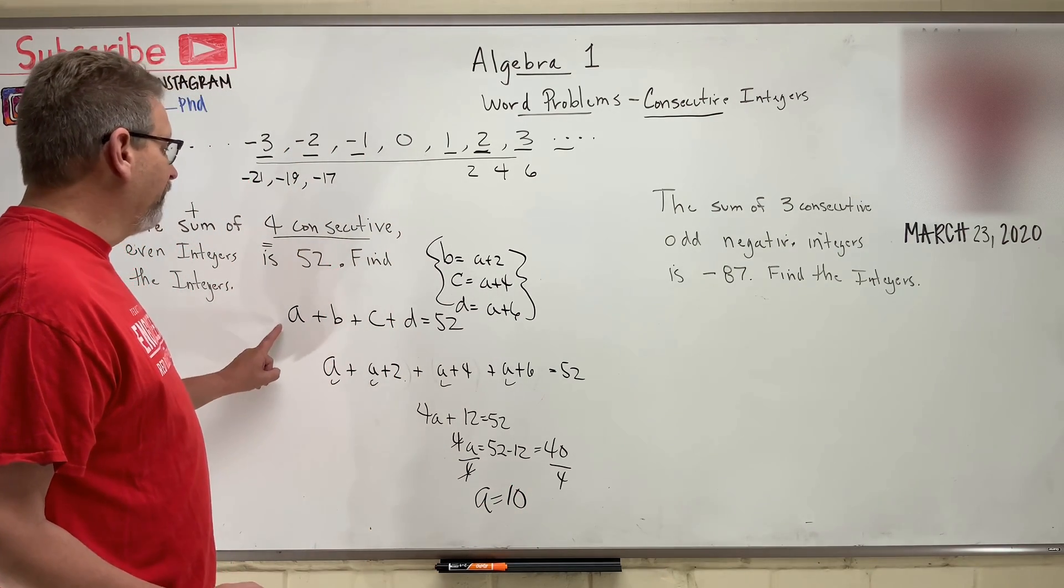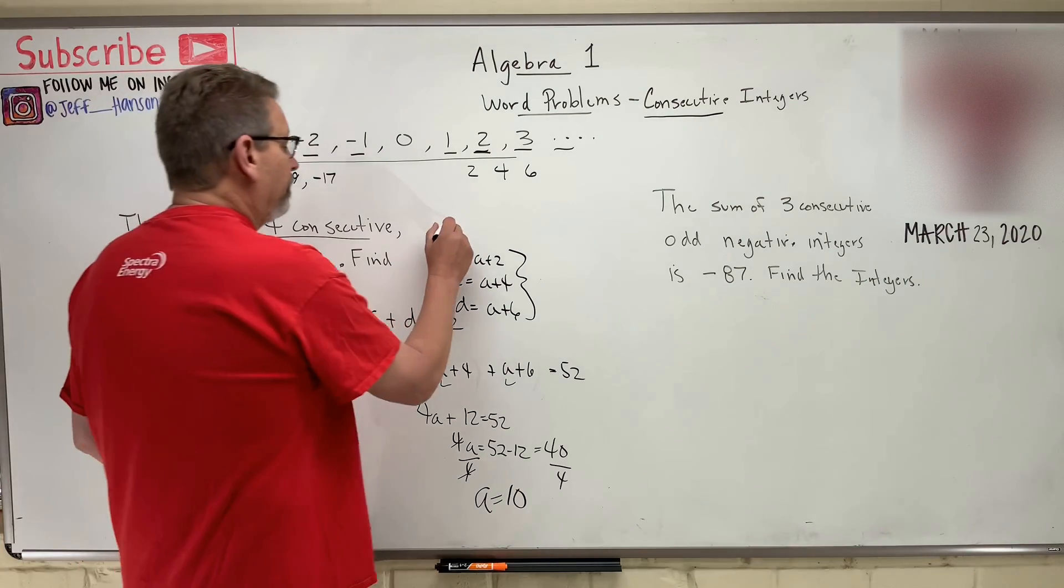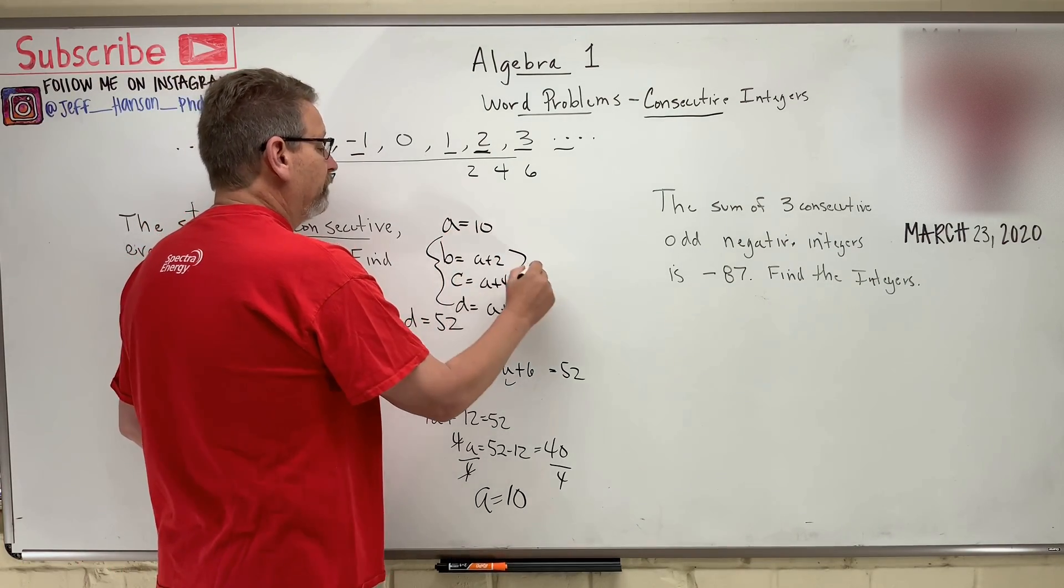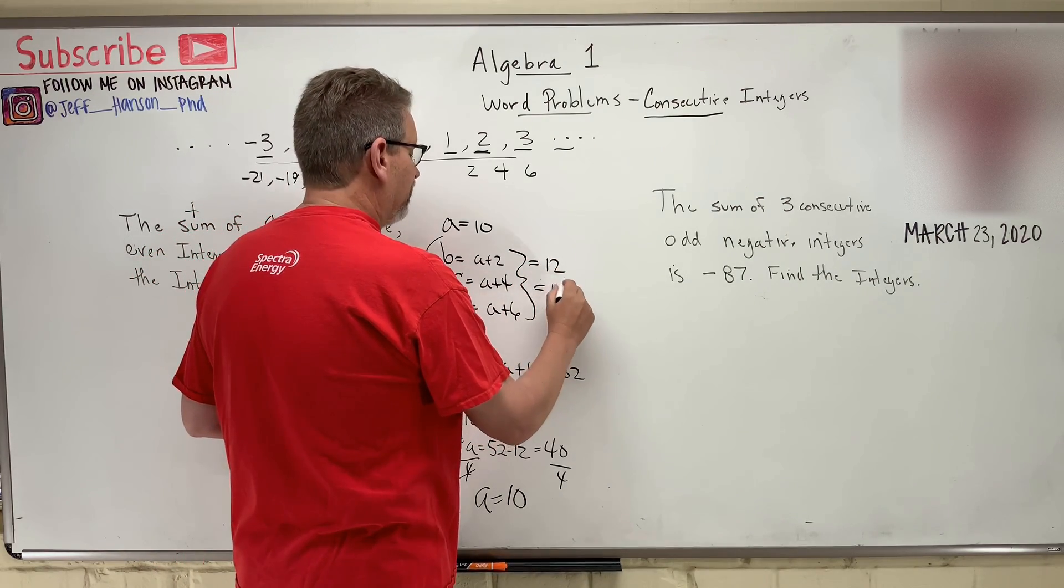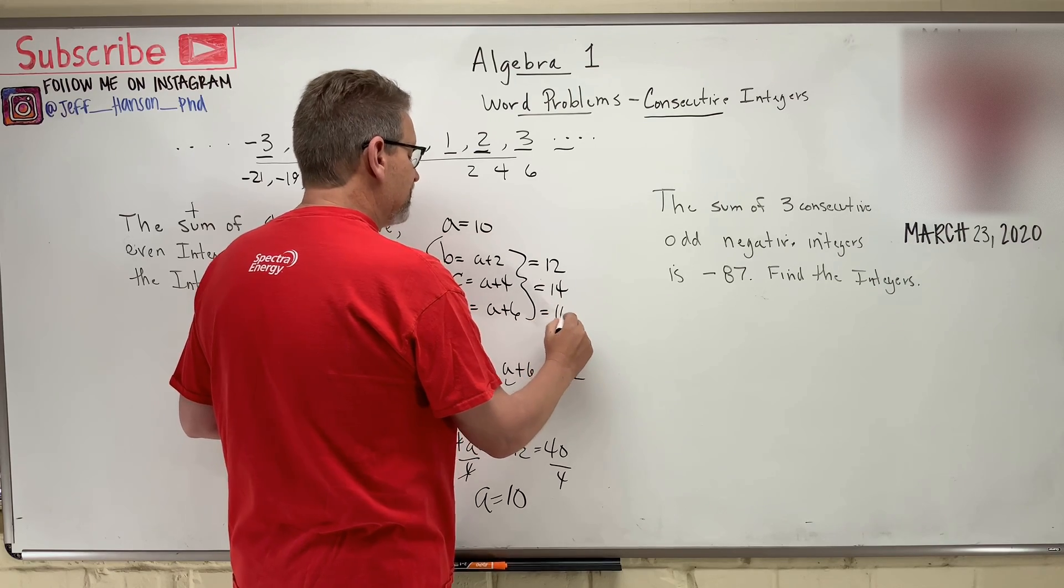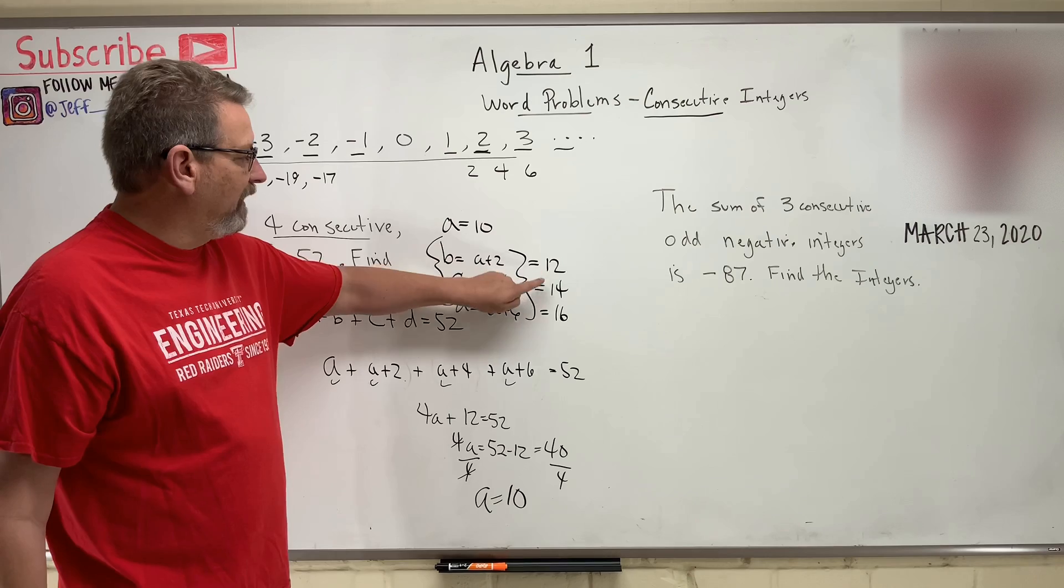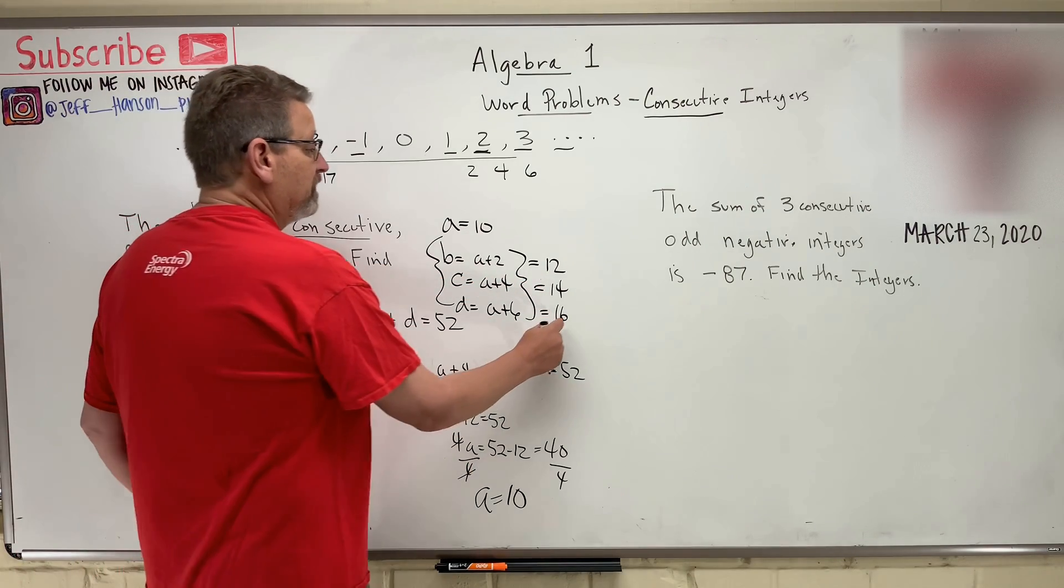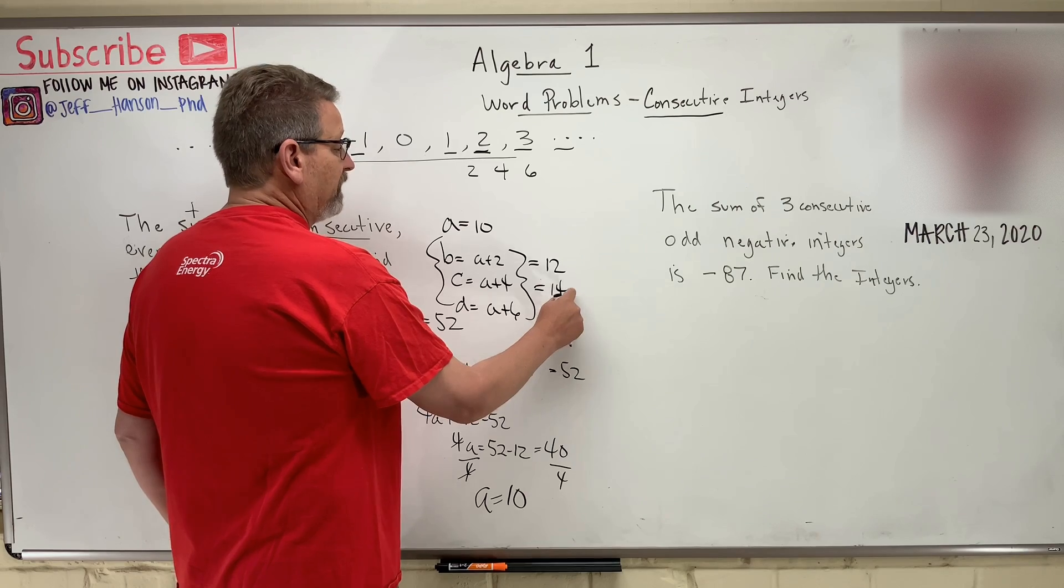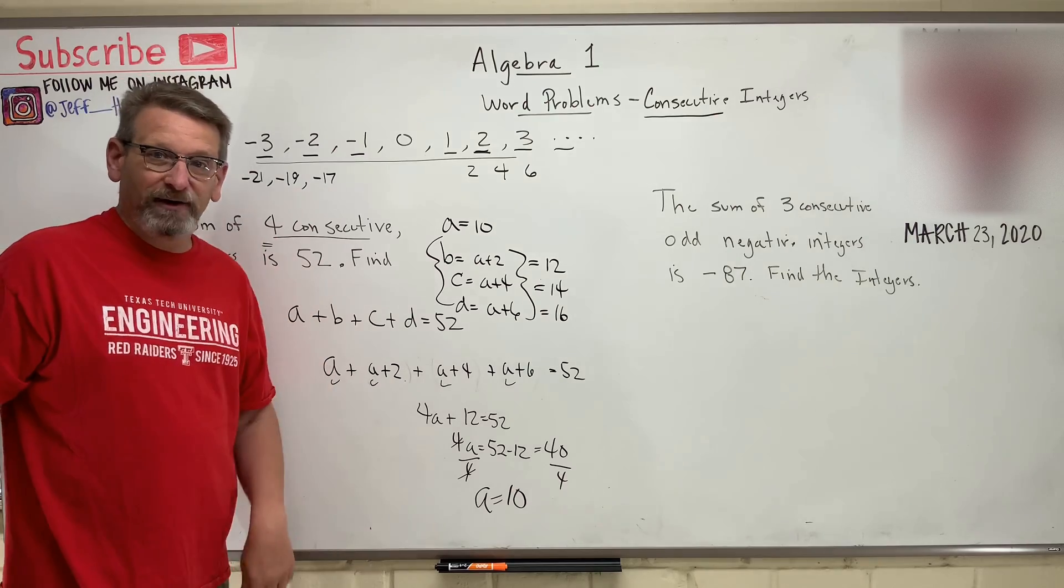So what are our four consecutive integers for this problem? Well, A is 10, B is 12, C is 14, and D is 16. So we put it in our calculator, and we add up that, and that, and that, and that, we should get 52, do we? 16 and 14 is 30, and that's 42 plus 10 more is 52. Yeah, baby, we got it, right?